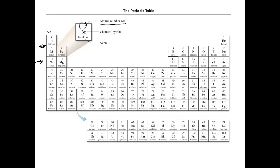Group 2 are the alkaline earth metals. Then we skip through this block here and we go to group 3, which I don't know the name of. Then group 4 are the carbonoids. Group 5, starting with nitrogen, are the pnictogens. Then chalcogens, halogens, and noble gases.